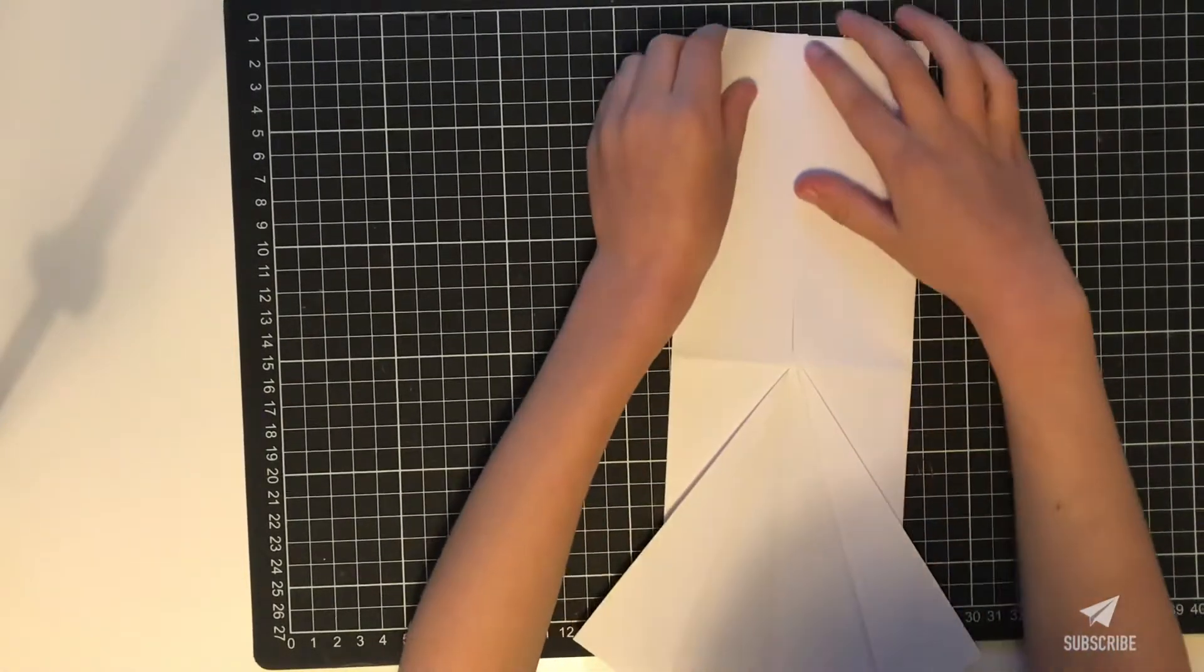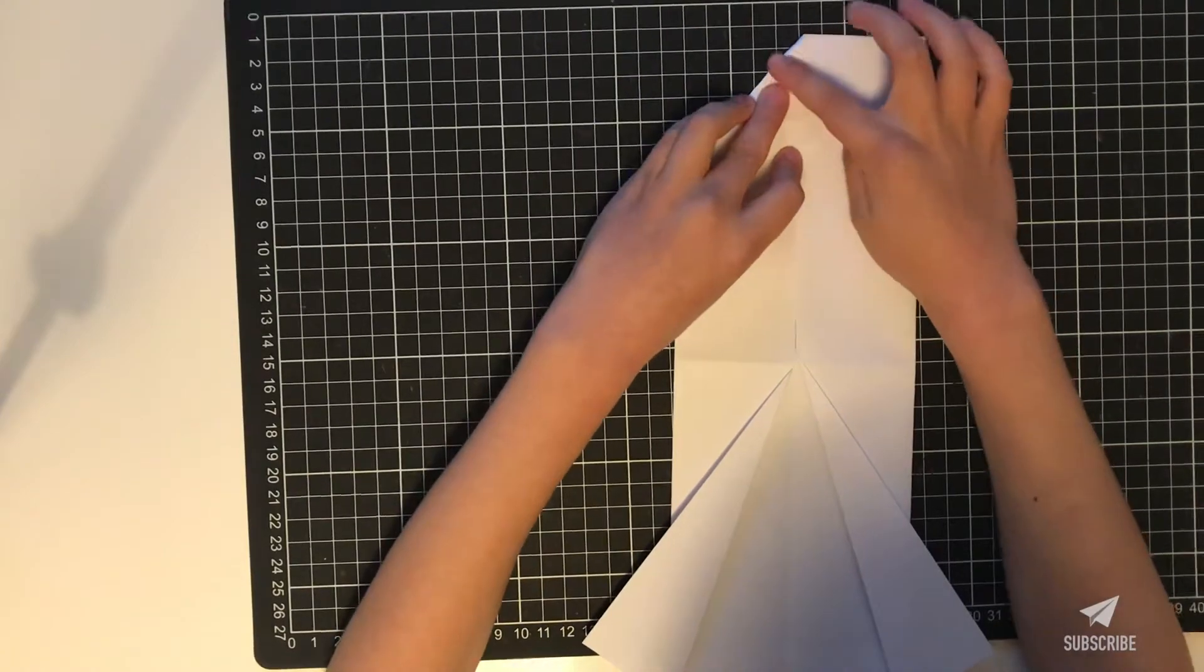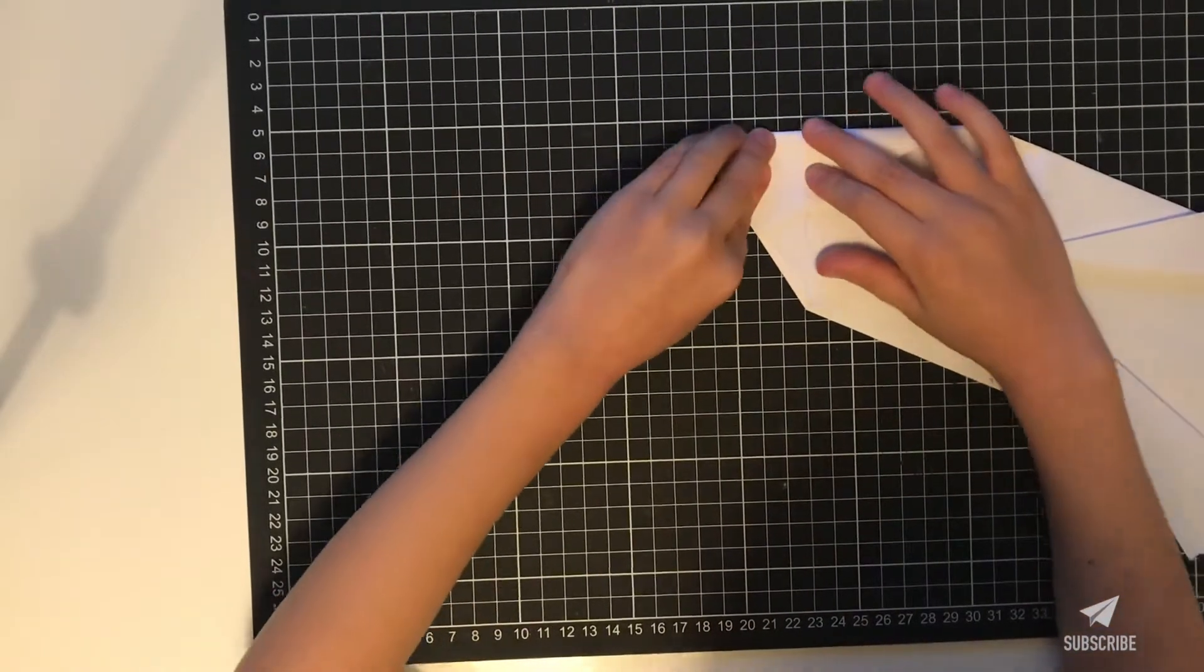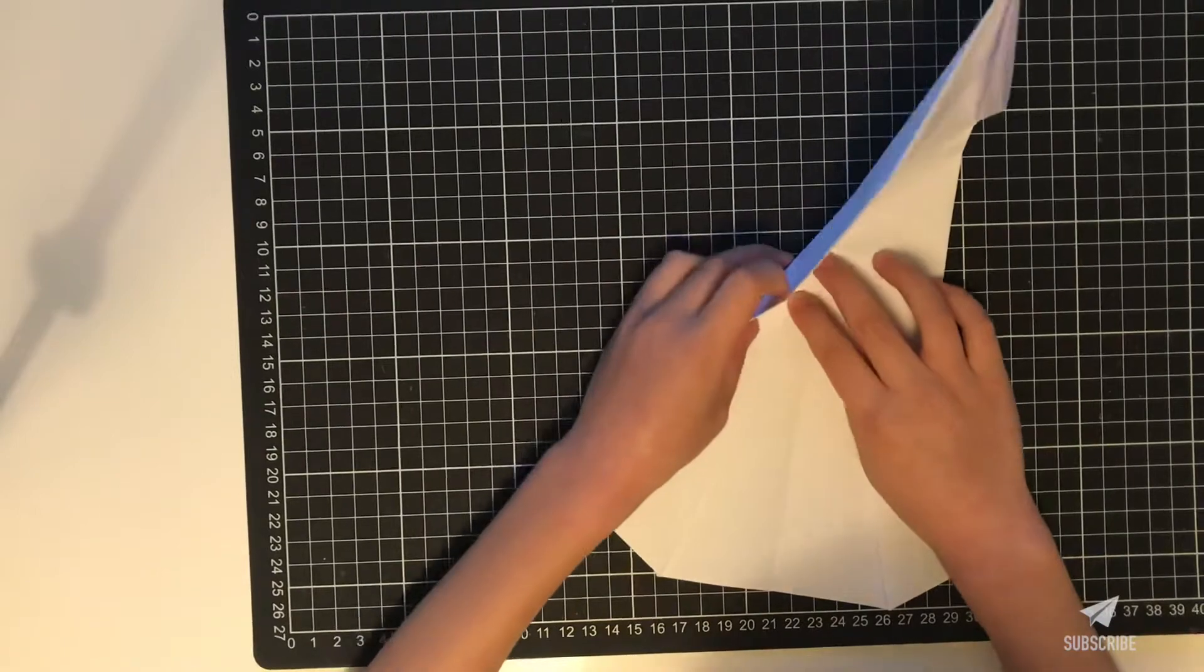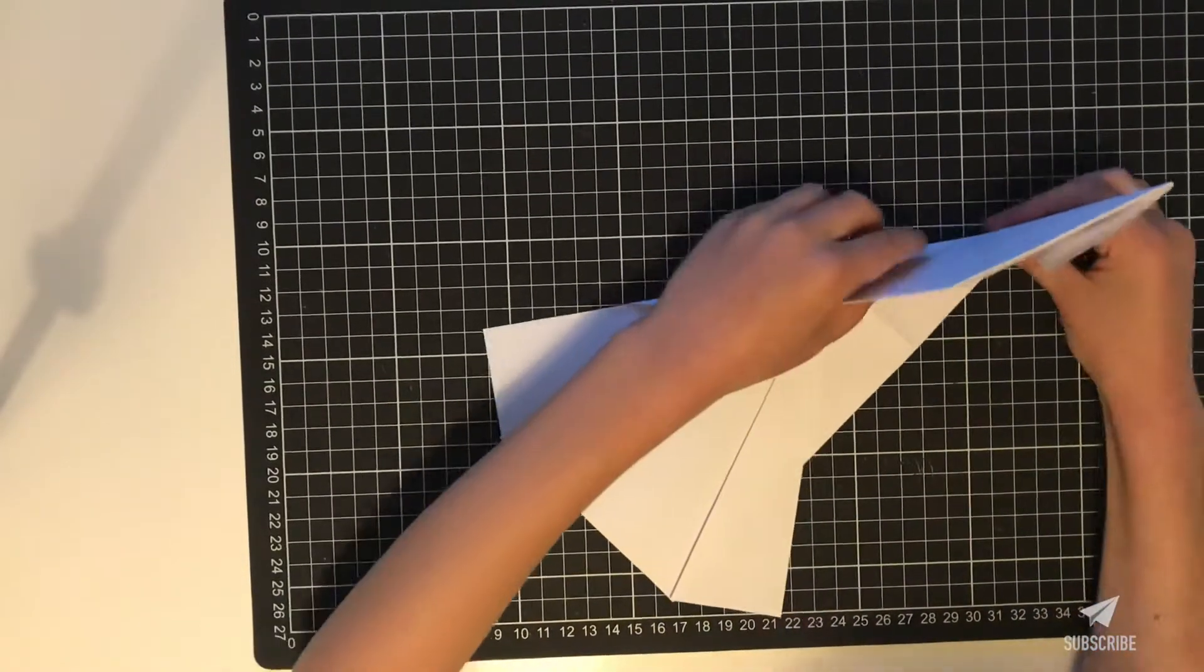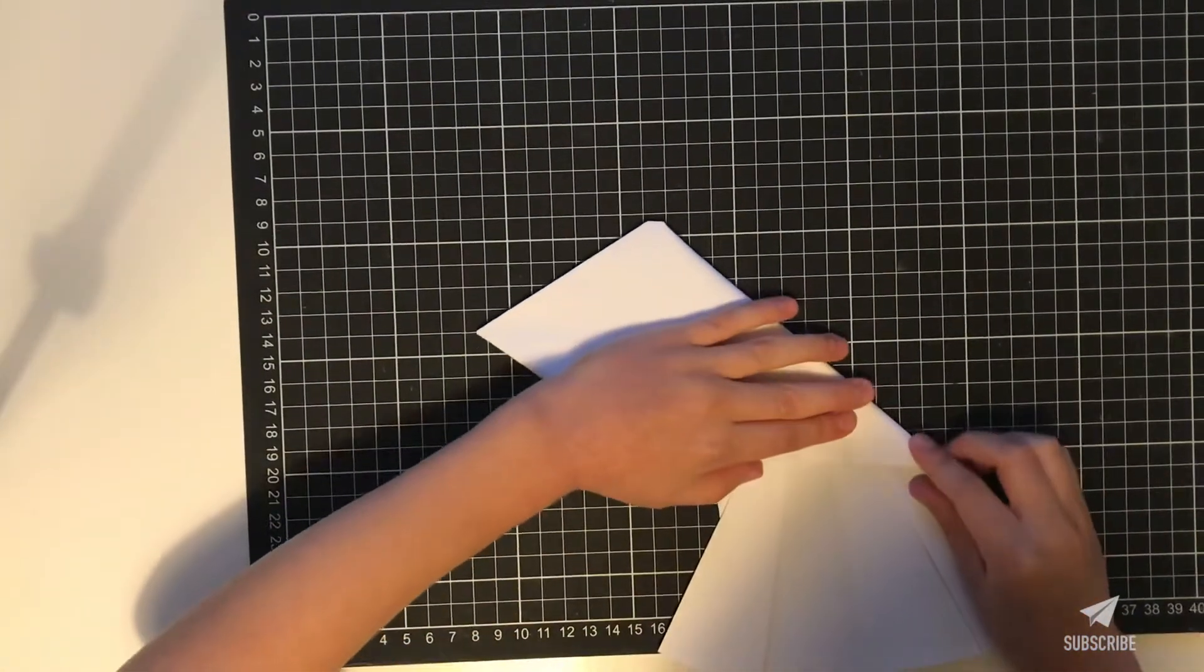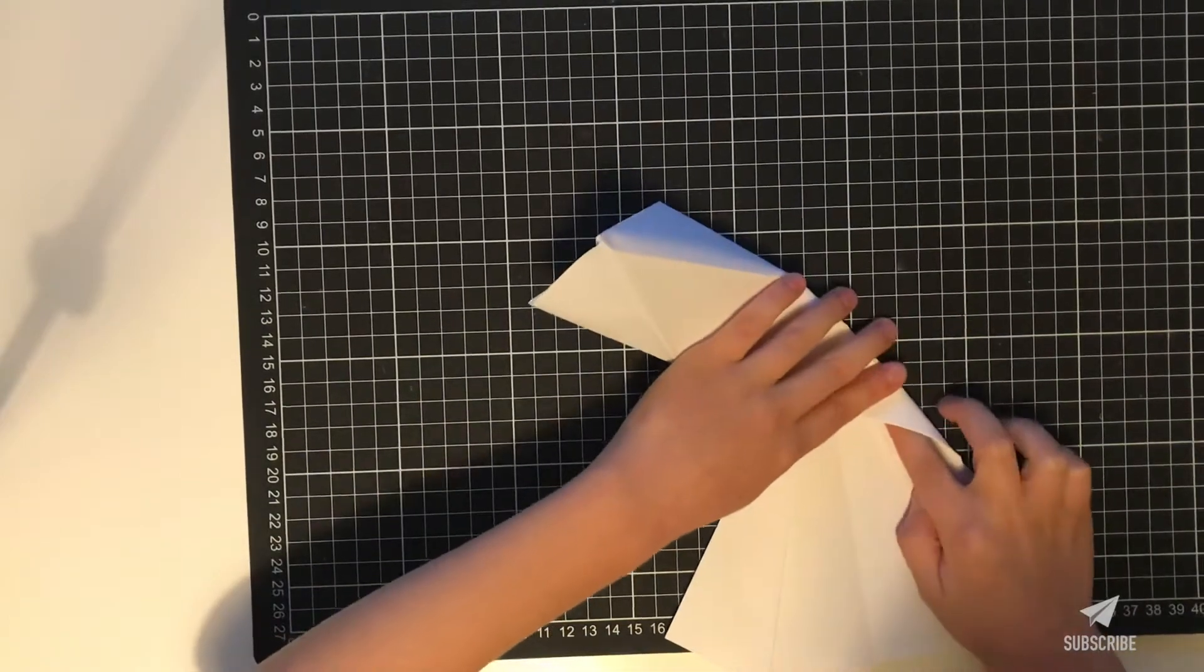Now we're going to fold these top edges to the middle, but we're going to do it like this. So we can go like this and then we're going to hold it along the side of this so it doesn't get folded. Otherwise like on here it gets folded, and you don't want that to happen.